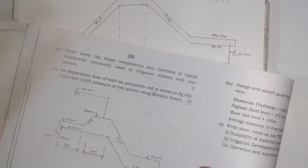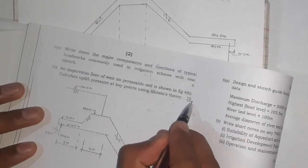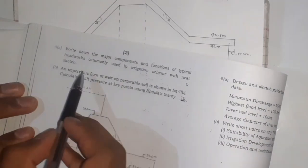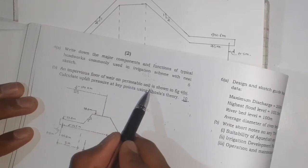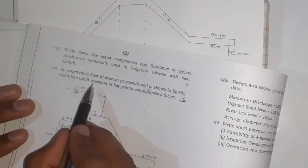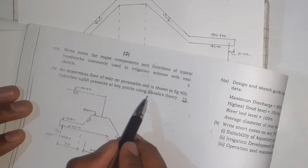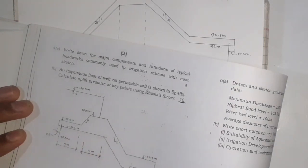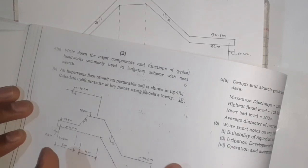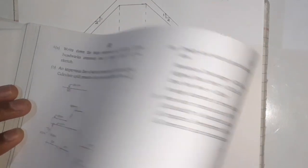To have an estimate point of view, I am going to show how much information related to the numerals. The question is an impervious flow of water and permeable soil each one in figure 4B. Calculate pore pressure at the key point using Harr's method. Now let's start with the question.